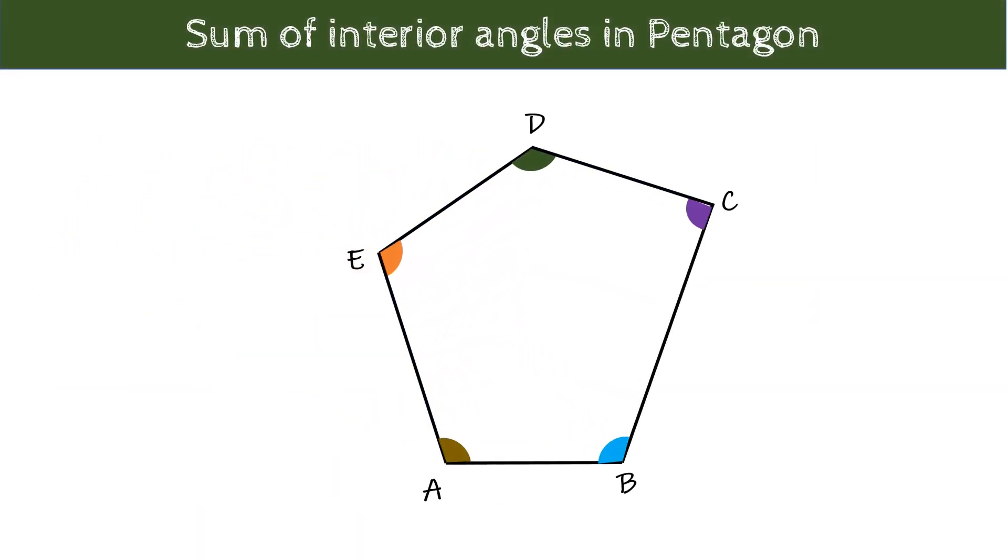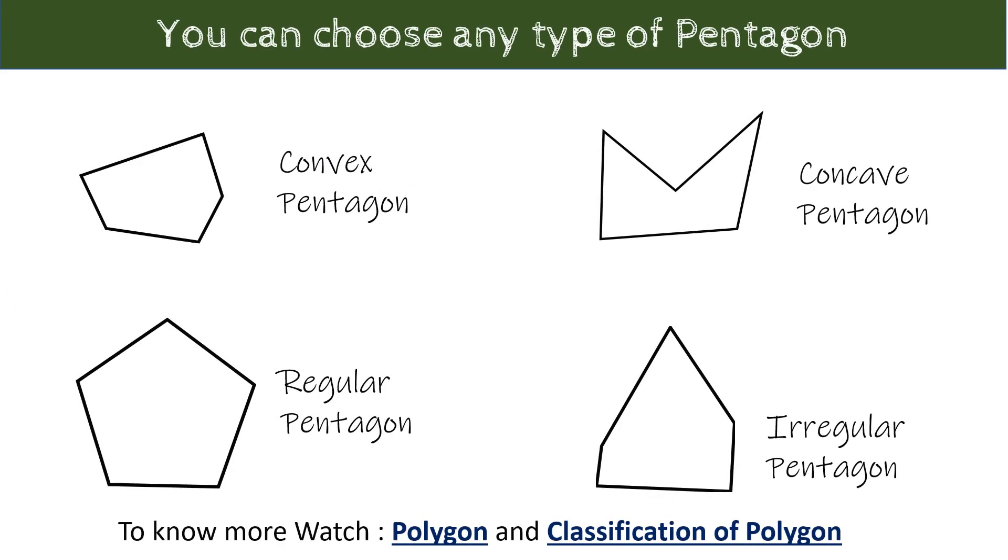But what if we have more than three or four sides? Let us try this on a five-sided polygon pentagon A, B, C, D, E. We are doing it on an irregular shaped pentagon, but you can choose any type of pentagon whether it is a convex or concave or regular or irregular and it will be true for all. You can watch our previous video on polygon and classification of polygon to understand more about these terms.